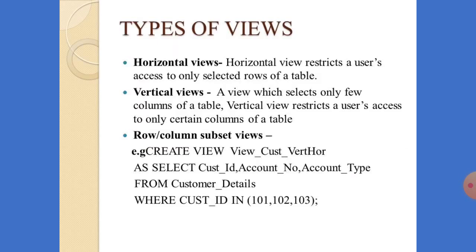Next we have the types of views: horizontal view and vertical view. A horizontal view restricts a user's access to only selected rows of a table. Whereas in case of a vertical view, it selects only a few columns in a table — it restricts the user's access to only certain columns of a table. You cannot see the whole table or all columns.